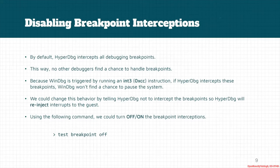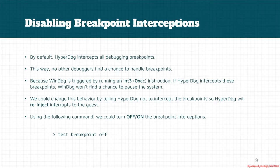Another trick: by default HyperDbg intercepts all debugging breakpoints, so no other debuggers like WinDbg or x64dbg get a chance to handle the breakpoint. WinDbg triggers by running an int3 or 0xCC instruction to pause the debugger, so if HyperDbg intercepts this breakpoint, WinDbg can no longer pause the system. We need to tell HyperDbg not to intercept breakpoints; it will then re-inject the interrupt exceptions to the guest system.